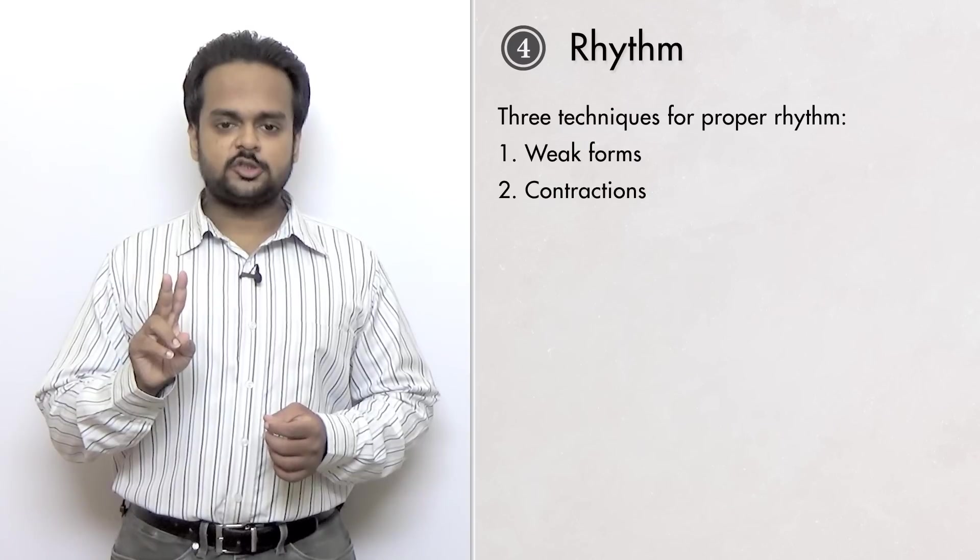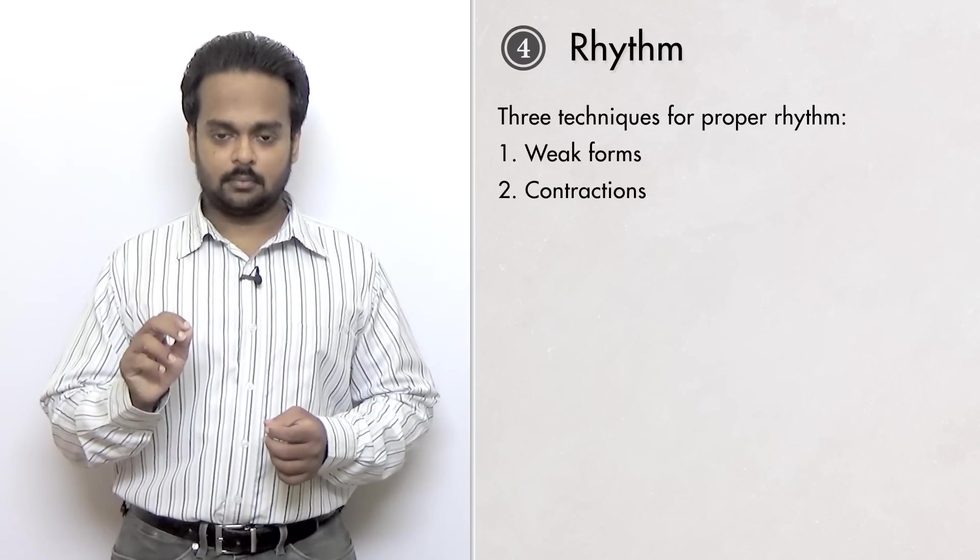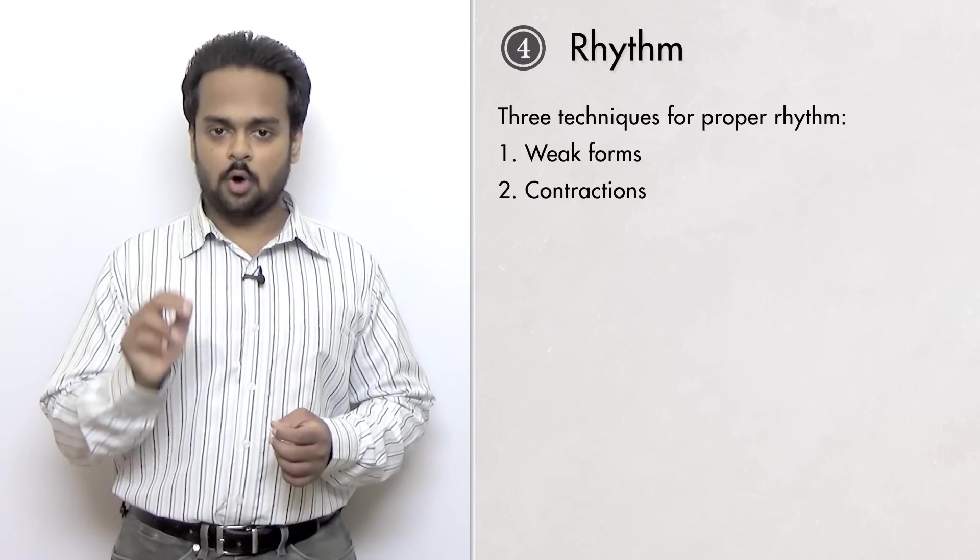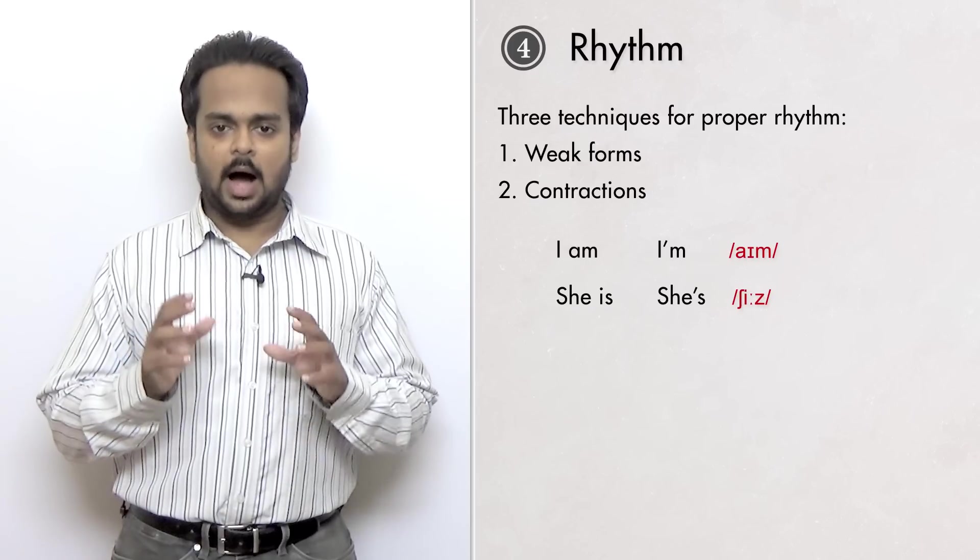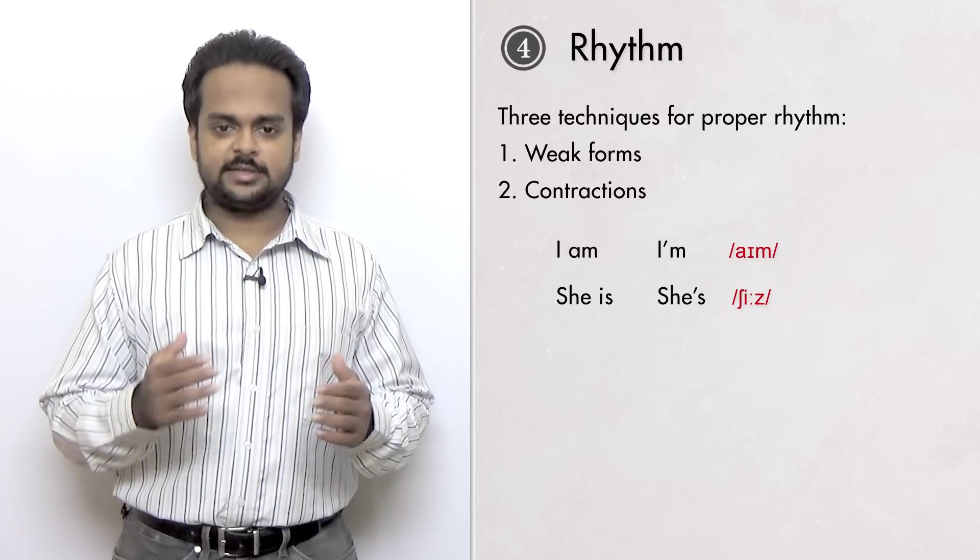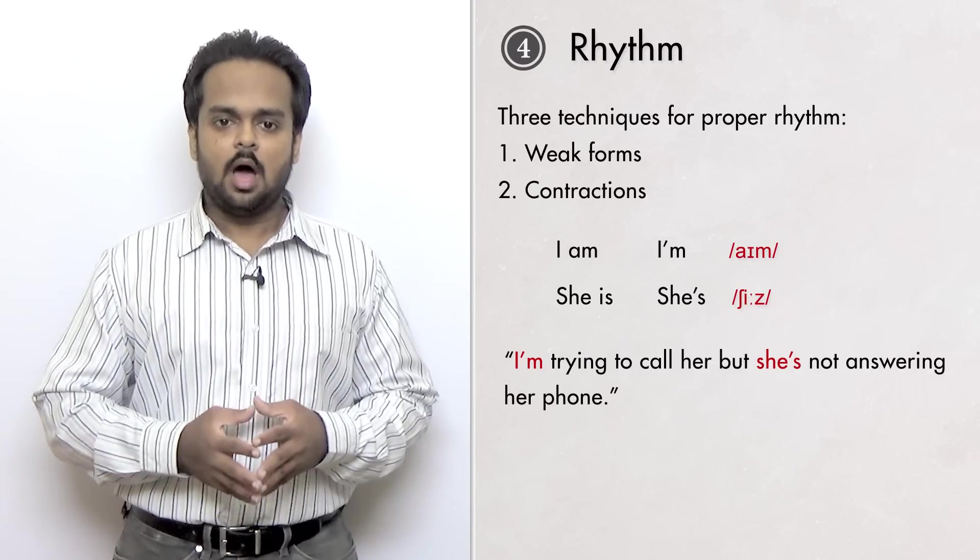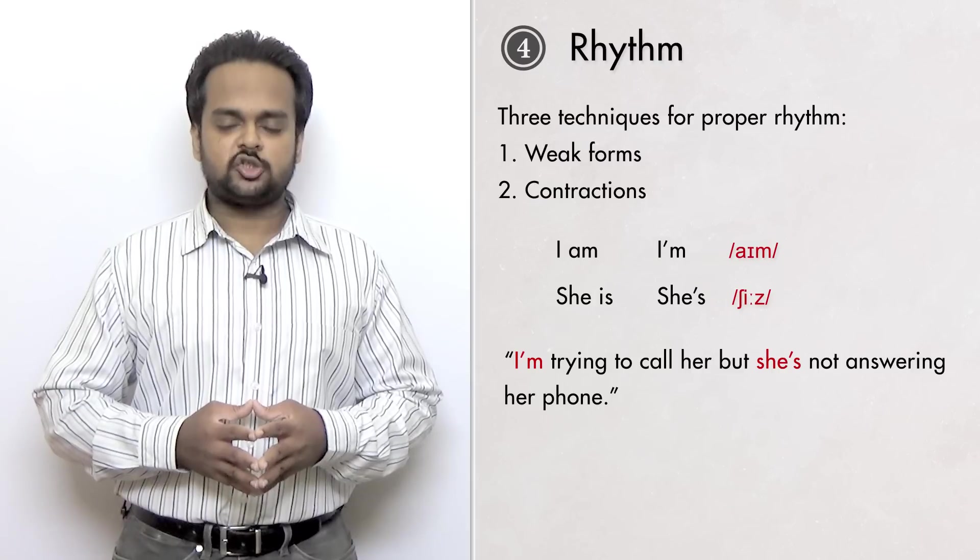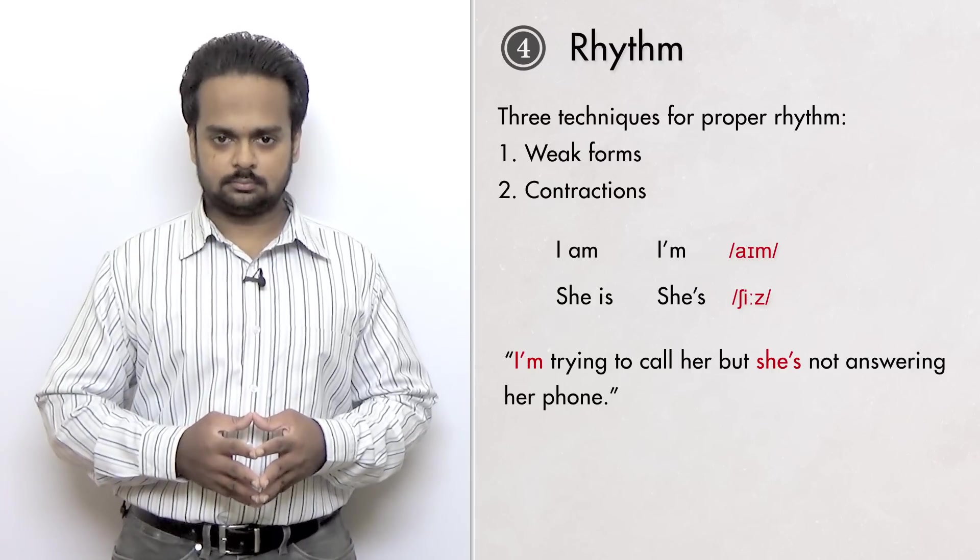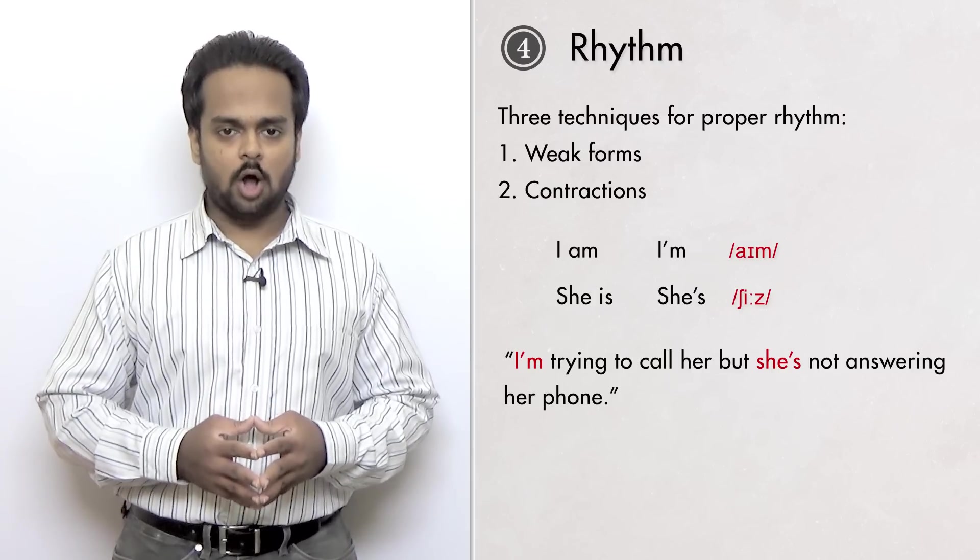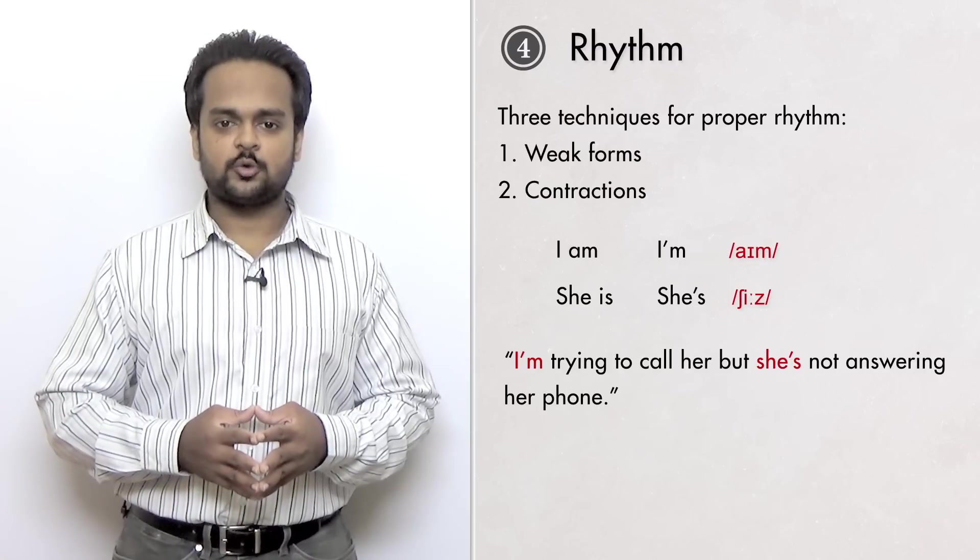The second technique is to use contractions. We do this a lot with pronouns. Instead of saying I am, we just say I'm. And instead of she is, we say she's. Here's a sentence. I'm trying to call her, but she's not answering her phone.